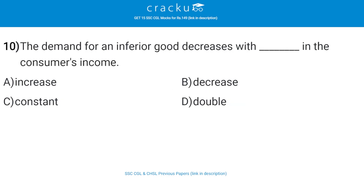The demand for an inferior good decreases with what change in the consumer's income? The correct answer is A, increase. The demand for an inferior good decreases with an increase in consumer income, because the consumer is now able to afford a product of better quality. Demand for inferior goods depends on the salary or income of a consumer.